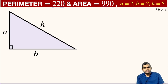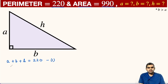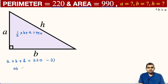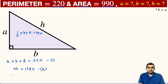The information given to us is: the perimeter is 220, so from here we get A plus B plus H equals 220. This will be our first equation. The area is given as 990, so from here we get half times B times A equals 990, or we can write AB equals 1980. This is the second equation. Also, because it is a right triangle, another equation comes into picture using the Pythagorean theorem: A squared plus B squared equals H squared.